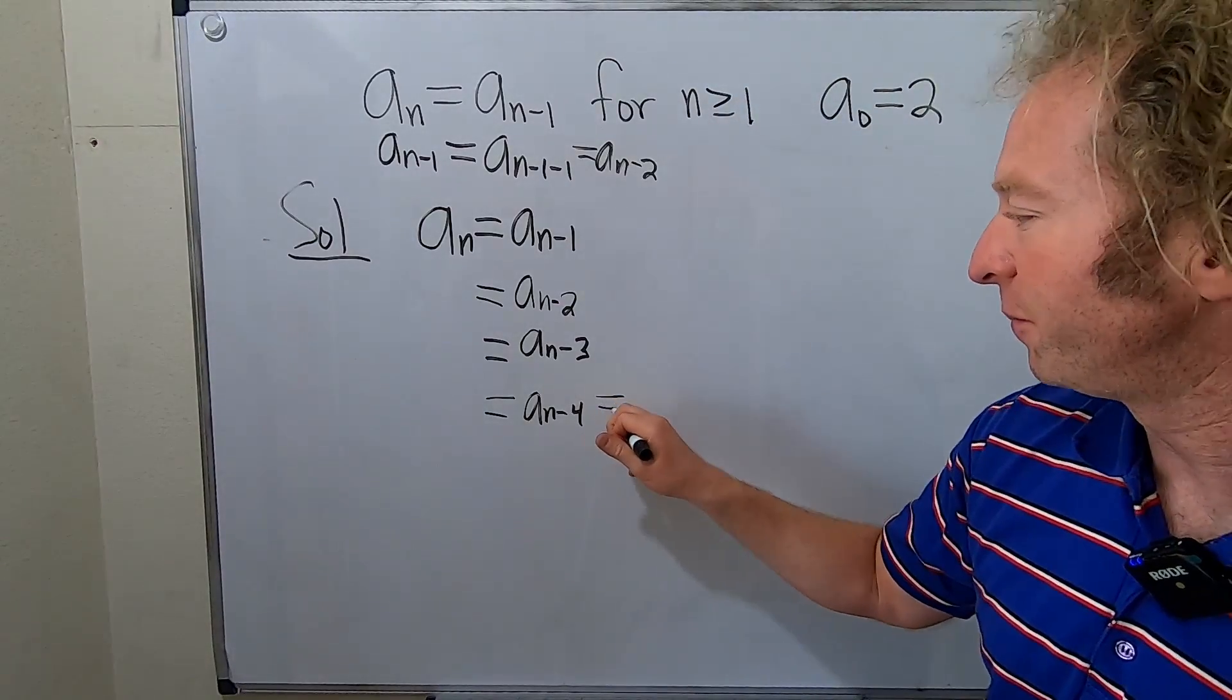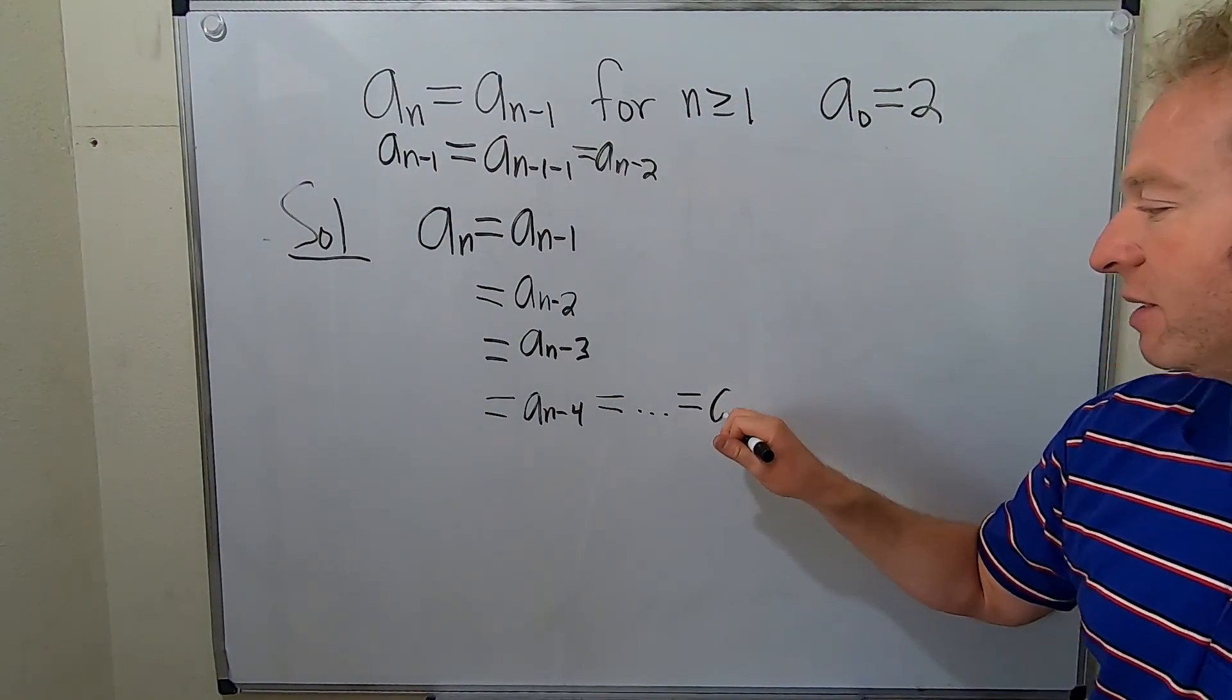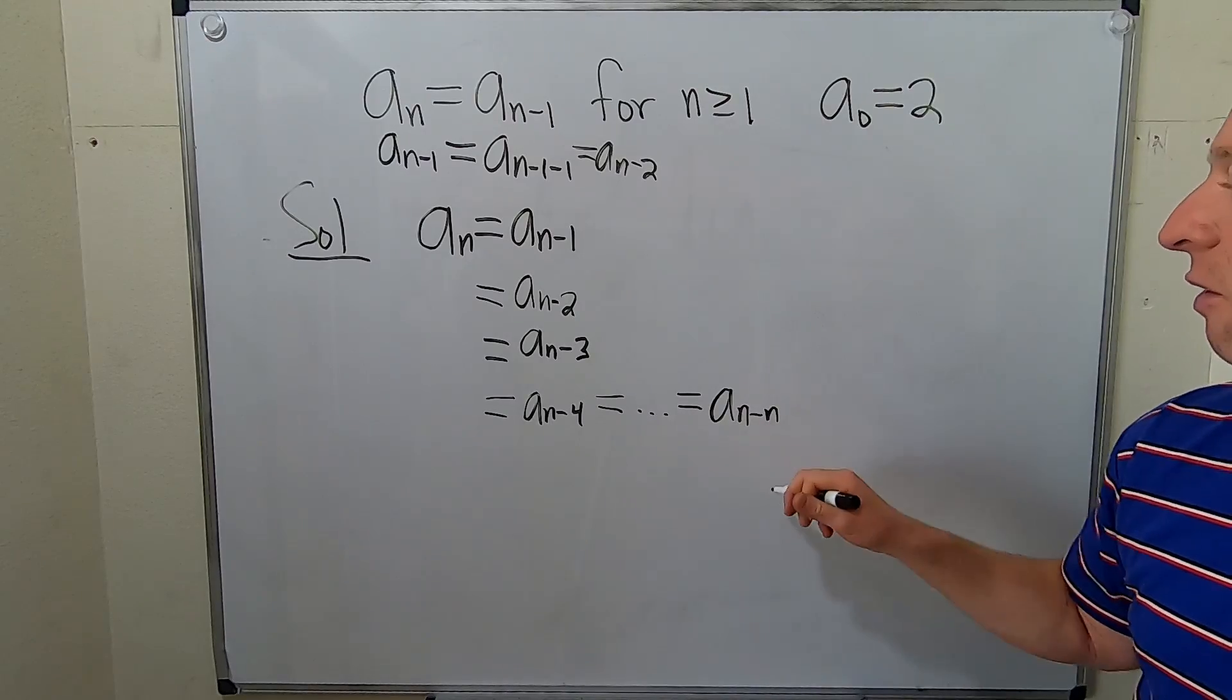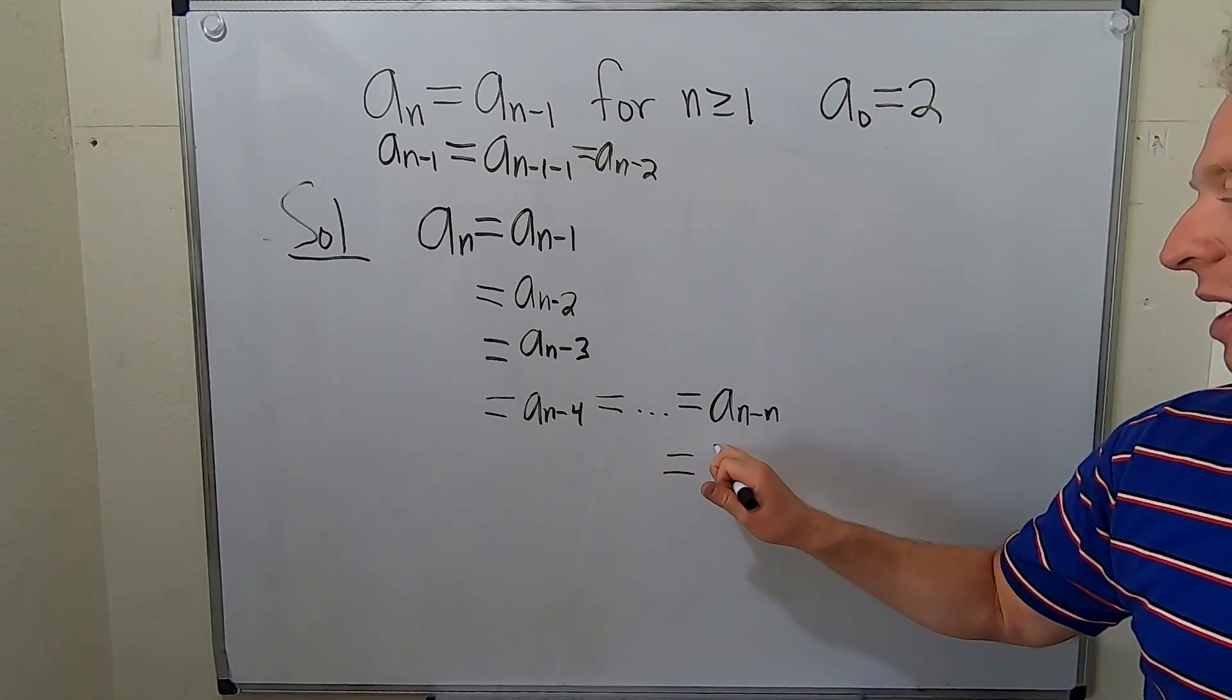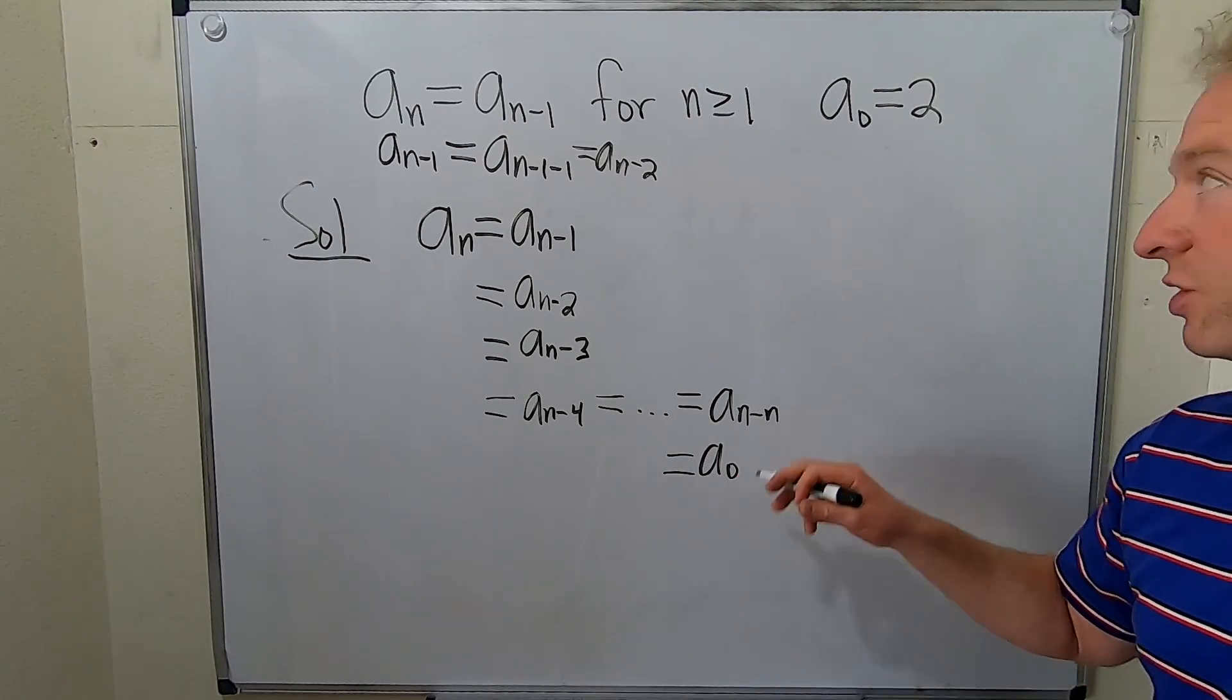So this is equal to dot dot dot equal to a sub n minus n. That's as far as we can go. And this is equal to a sub zero, which is just equal to two.